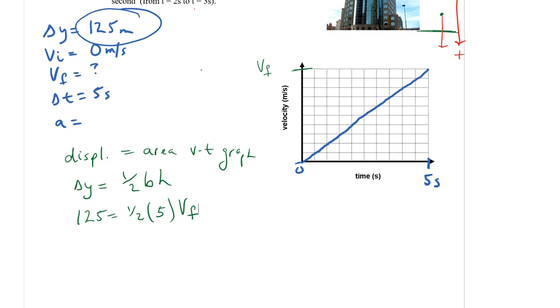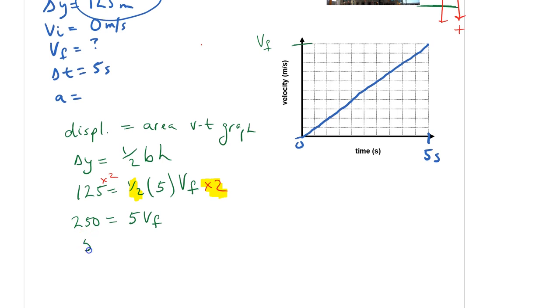So mathematically, I'm going to multiply both sides by two, so that I get 250 equals, times two here, times two here. This half and this times two turn into one, so they kind of cancel each other out, so I get one times five times VF, so I get five times VF. Now I'm going to divide both sides by five, so 50 is equal to the final velocity.